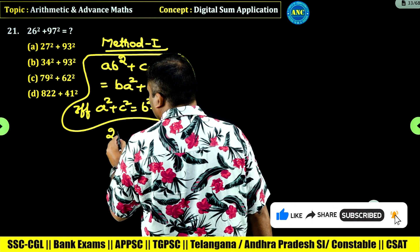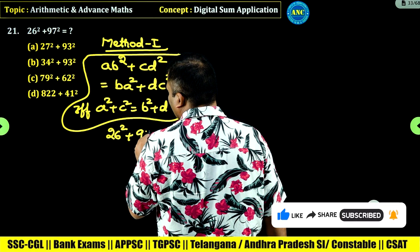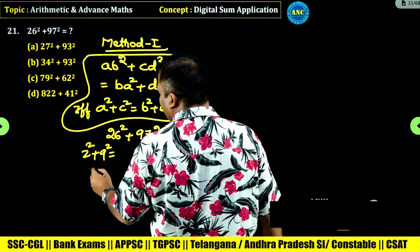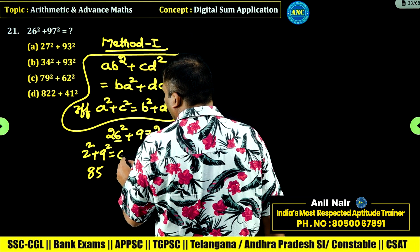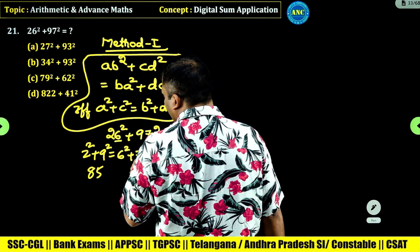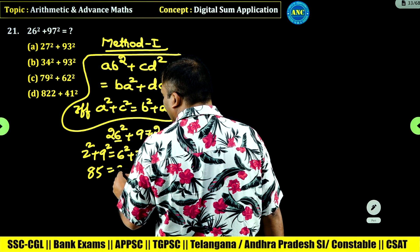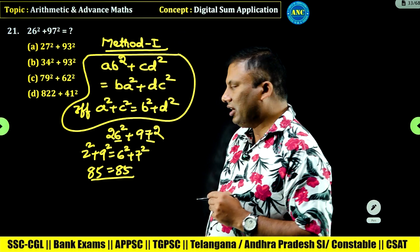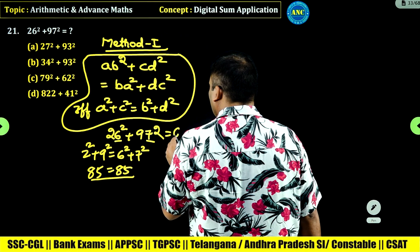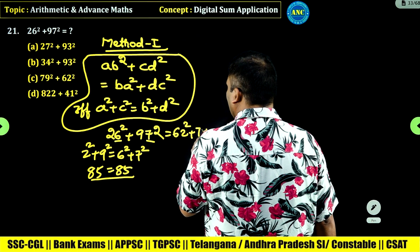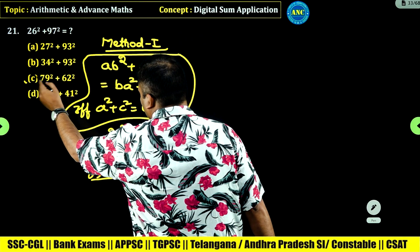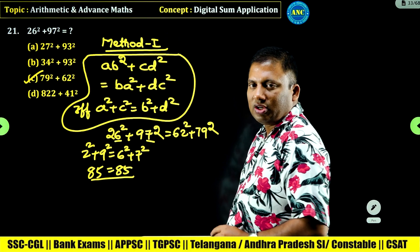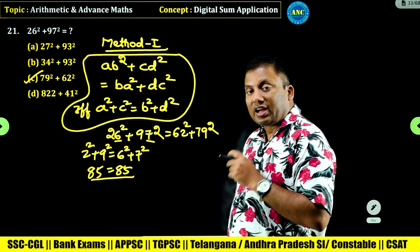Now if you see 26 square plus 97 square, the tens digit squares sum: 2 square plus 9 square is 85. The units digit squares sum: 6 square plus 7 square is 36 plus 49, which is also 85. Since the tens digit squares sum equals the units digit squares sum, 26 square plus 97 square is equivalent to 62 square plus 79 square. This is a concept-driven question.